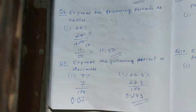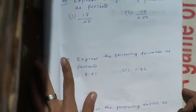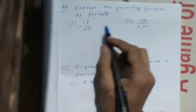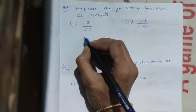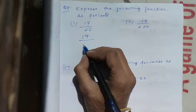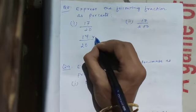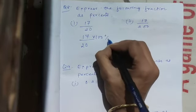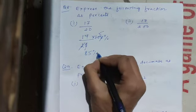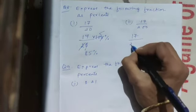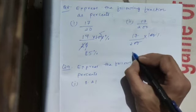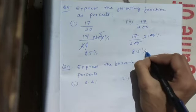Question number 8: express the following fraction as percent. Before, percent was given and we expressed in fraction. Now fraction is given and we express in percent. When fraction or decimal is given and we have to convert to percent, we multiply the numerator by 100 percent. For 17 by 20: cancel one zero, 20 into 5 and 100 into 5 gives 17 into 5, which is 85 percent. For 17 by 200 into 100 percent: the two zeros cancel, leaving 17 divided by 2, which is 8.5 percent.